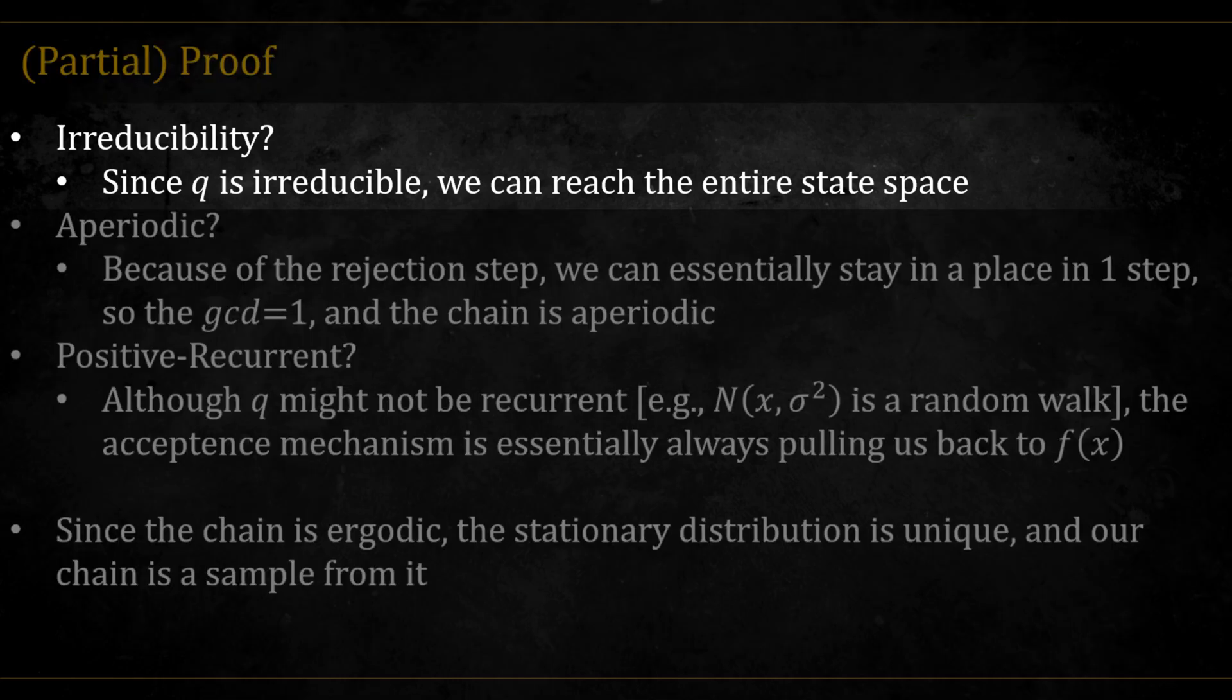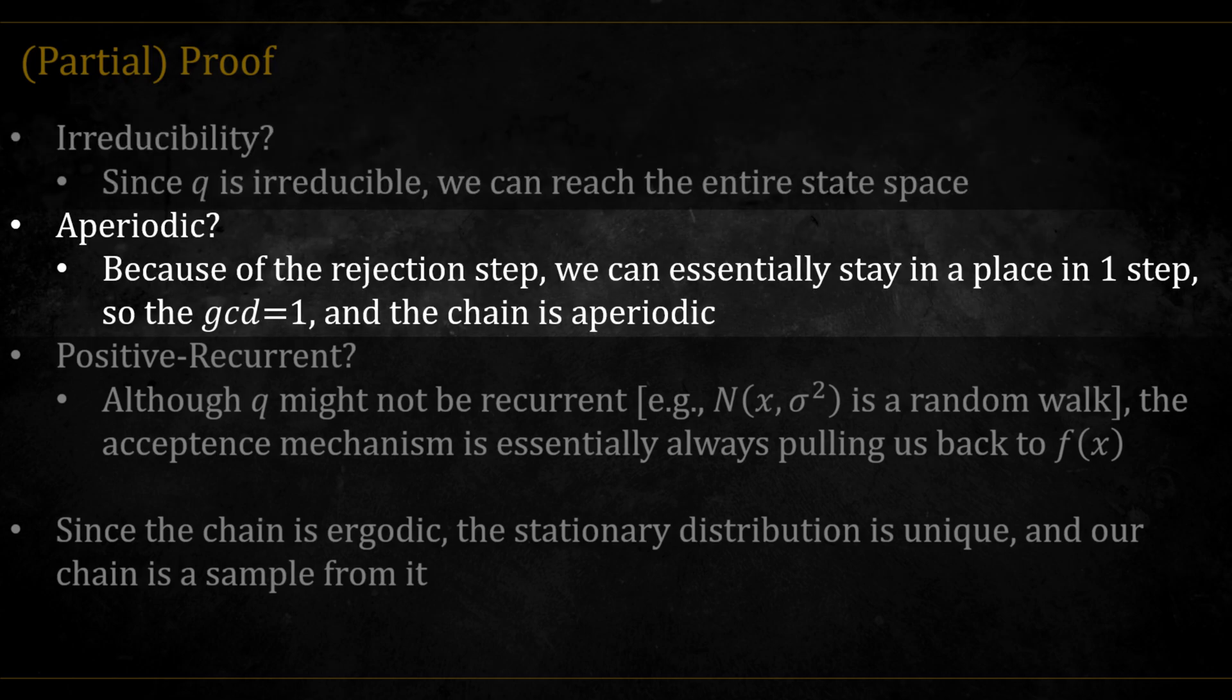The chain is irreducible because obviously using q, we can reach the entire state space. The chain is aperiodic since we have some probability of rejecting the step and staying in the same point. And so this means the greatest common divisor will be equal to 1, and the chain is aperiodic.